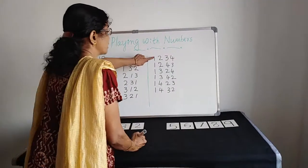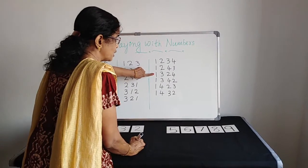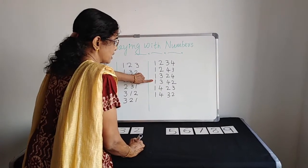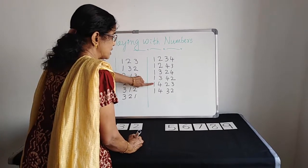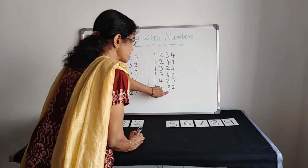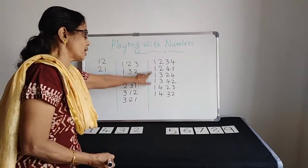1,234, 1,243, 1,324, 1,342, 1,423, 1,432. There are 6 numbers starting with 1.